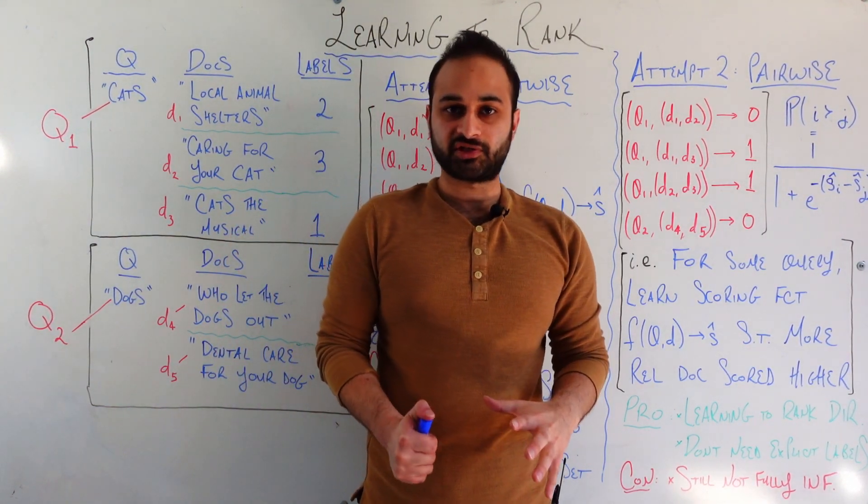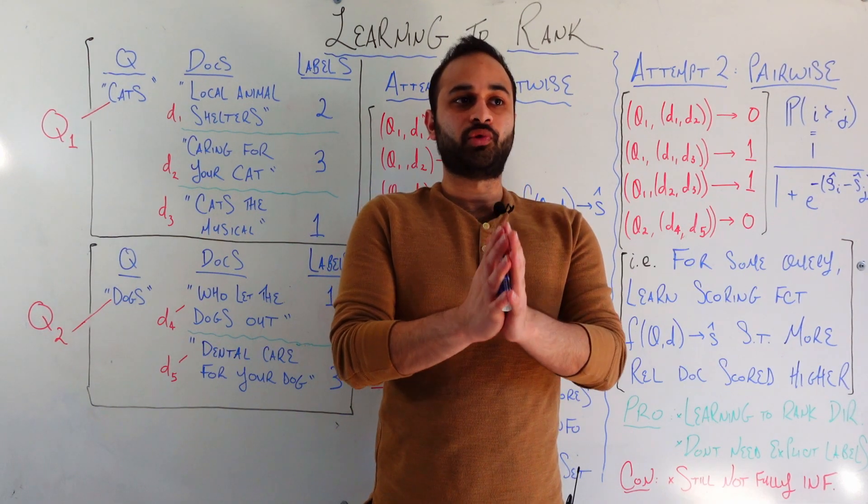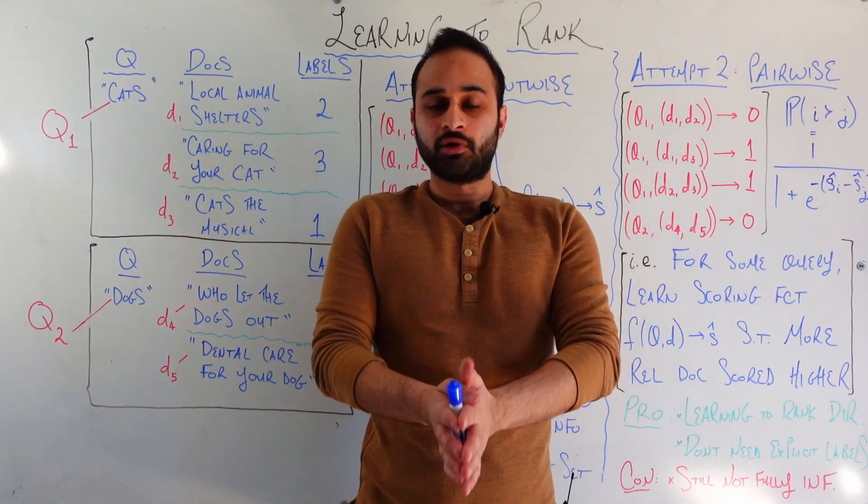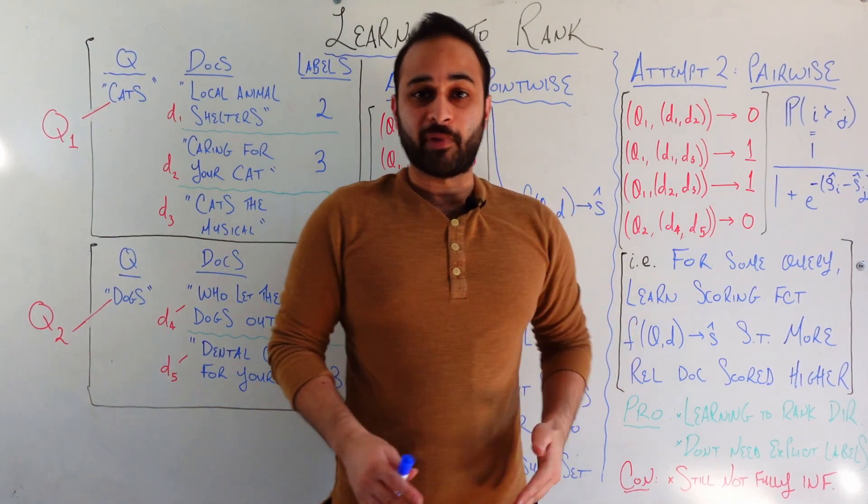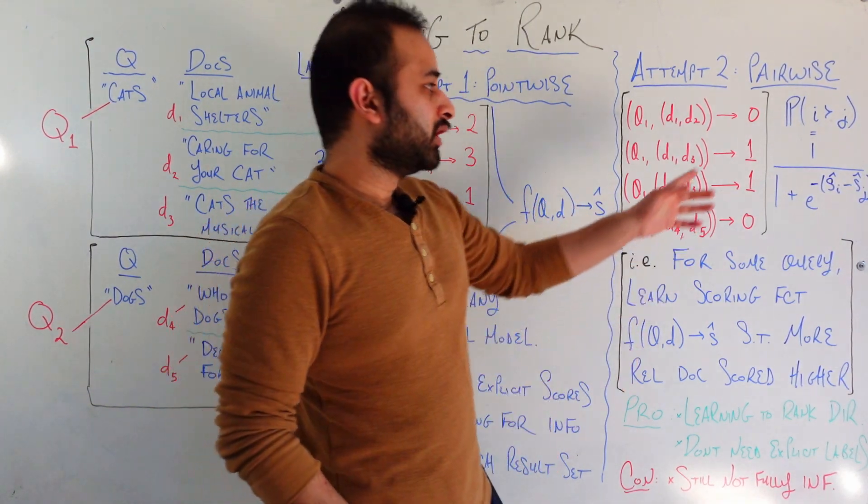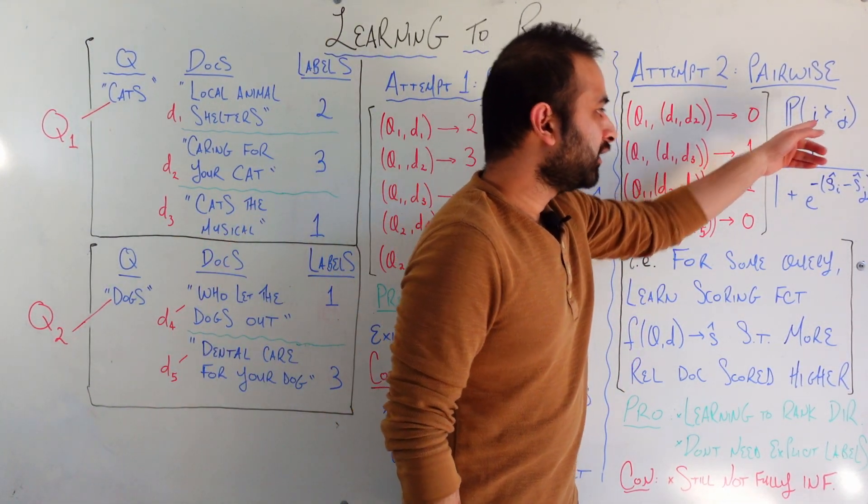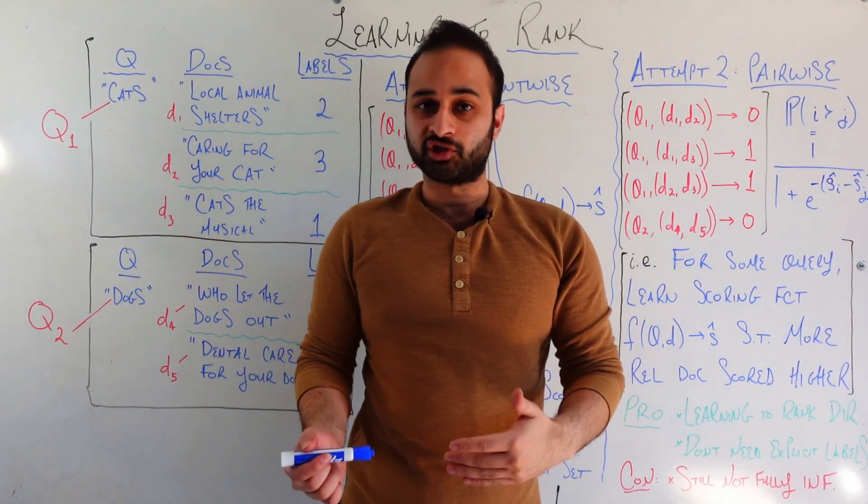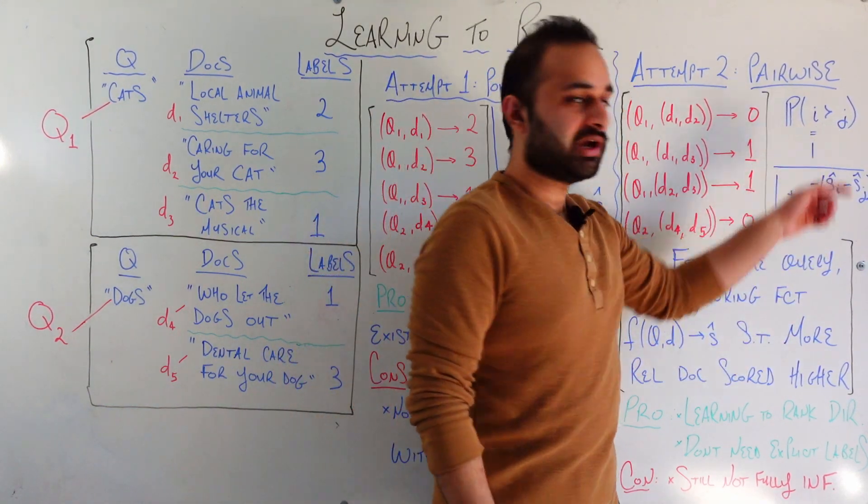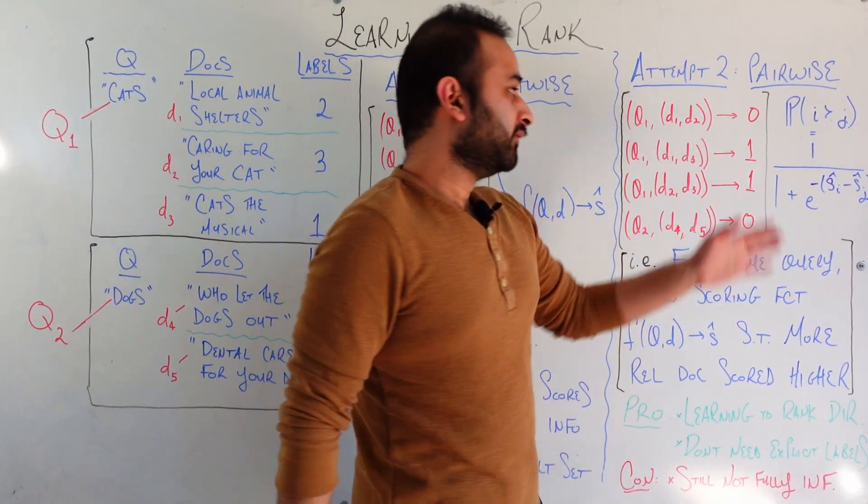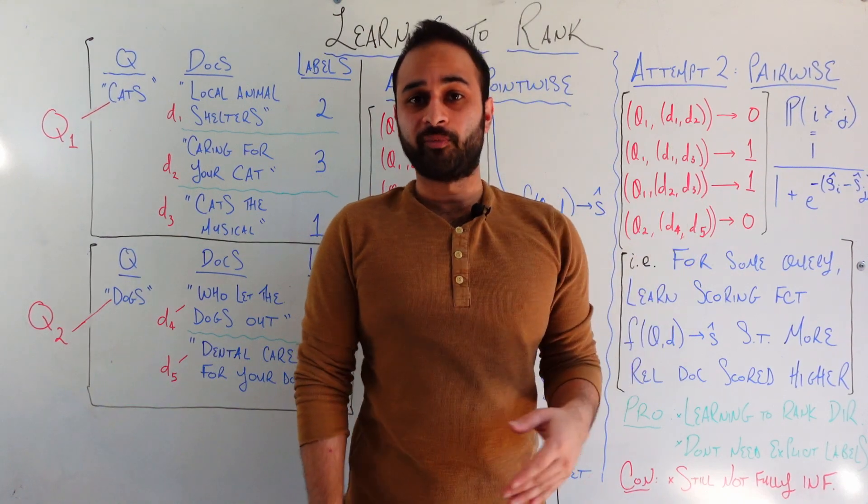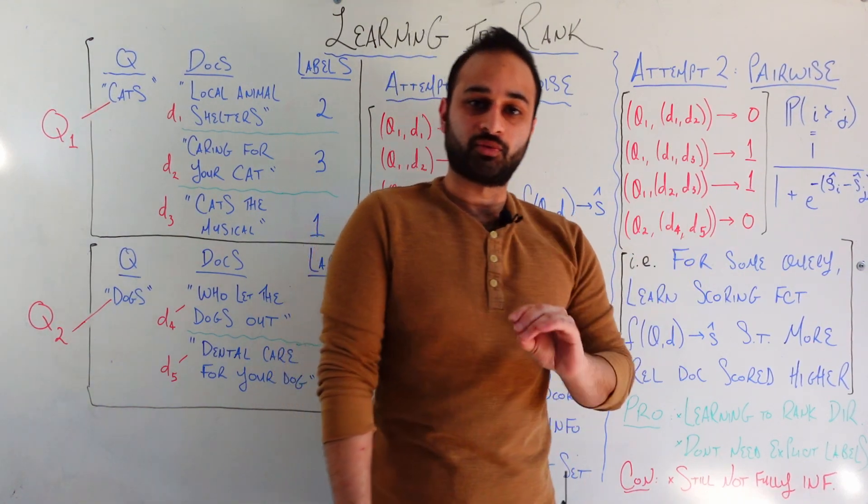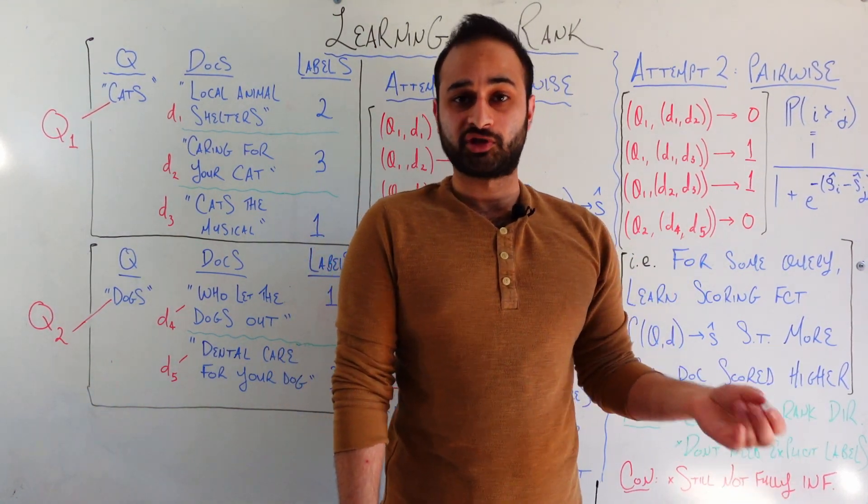The next place this differs is that now we are going to explicitly try to achieve the goal of matching the following probability. So here's some notation. PI, this weird little greater than symbol, actually means that I is ranked higher than J. So in this context, I and J are some documents. And this term here means what's the probability that document I is ranked higher than document J for a particular query.